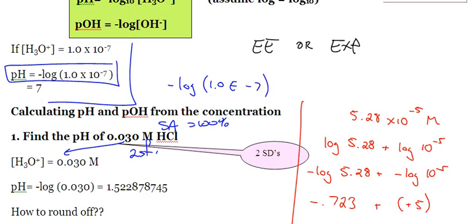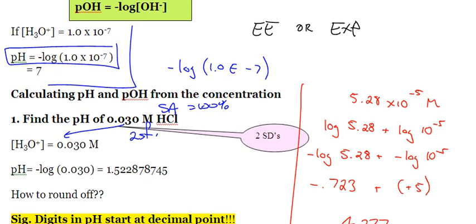You should practice typing this equation into your calculator before we get started. You should practice typing in a negative, the log button, a bracket maybe, and then 1.0 times 10 to the negative 7, and bracket. When you hit enter or equals on your calculator, it should equal 7.